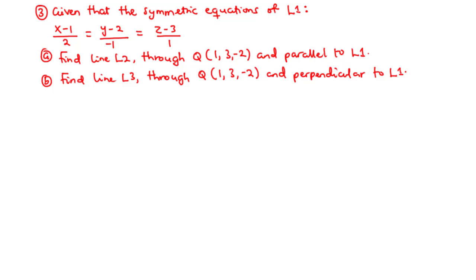Now let's move on to example 3. In example 3, given the symmetric equations of line 1, which are x minus 1 over 2 equals y minus 2 over negative 1 equals z minus 3 over 1. A, find line 2, which passes through Q and is parallel to line 1. And then B, find line 3, which passes through Q and is perpendicular to line 1. So let's try to solve this together.